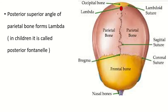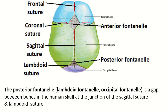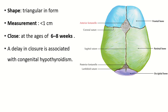Posterior fontanelle: the posterior-superior angle of the parietal bone forms the lambda in adults. In children, this part is known as the posterior fontanelle. It is triangular in shape and is situated in between the sagittal suture and lambdoid suture. Its measurement is less than 1 cm.